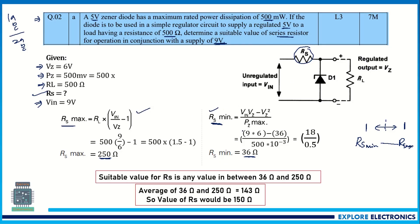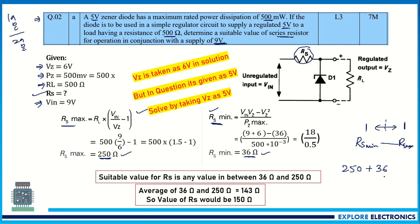After substituting the values, we get Rs_minimum = 36 ohms and Rs_maximum = 250 ohms. Adding these: 250 + 36 = 286, then dividing by 2 gives 143 ohms as the optimum Rs. You can write 143 ohms or round it off to 150 ohms — so 150 ohms is chosen as the optimum value of Rs.